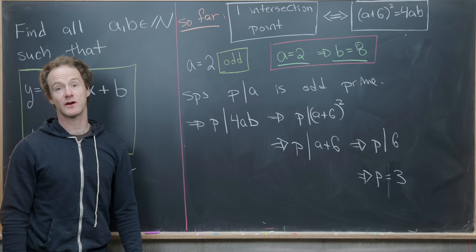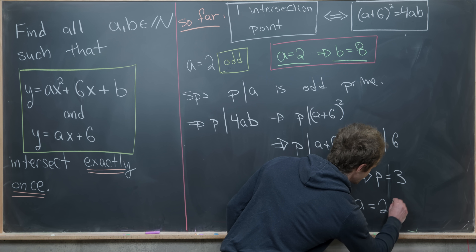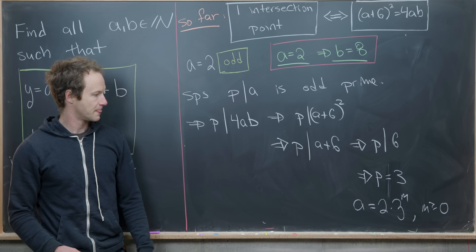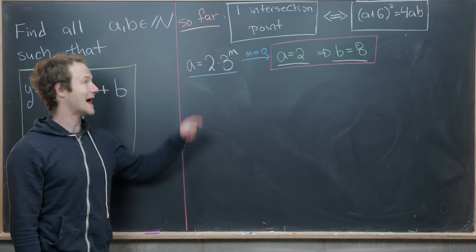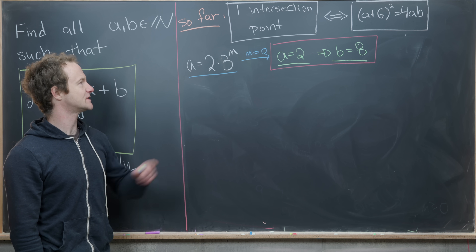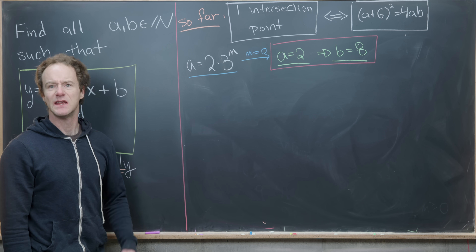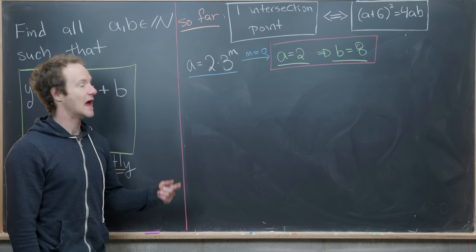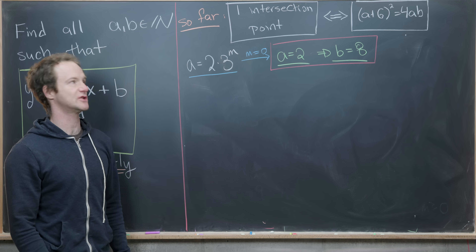This means the odd part of a can only be a power of 3, so a = 2·3^m for some non-negative integer m. We already handled m = 0, giving a = 2, b = 8. Now let's substitute a = 2·3^m into (a+6)² = 4ab to find other solutions.